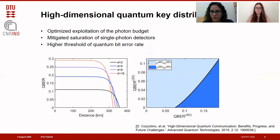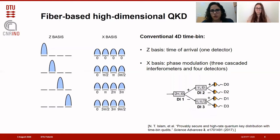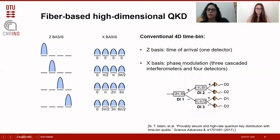When dealing with single-mode fibers, time-bin encoding is a convenient choice for high-dimensional QKD. In the conventional four-dimensional protocol with time-bin encoding, the two bits of information are encoded in the Z basis by using the time of arrival of the photon, which requires only one detector to be measured at the receiver. On the other hand, the X basis is quite complicated, since all four time bins have to be combined with different phases, and as a consequence, a complex setup with a cascade of three interferometers and four detectors is necessary at the receiver.